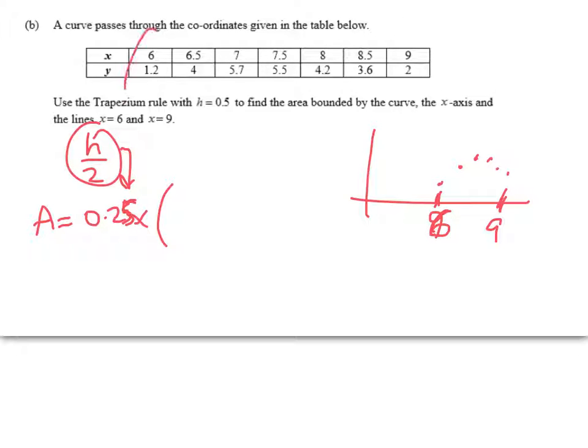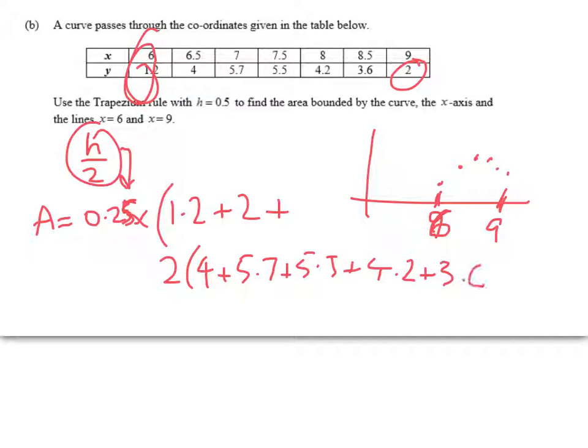So that's my h over 2, times, and then my n points. 1.2 plus 2, plus 2 times all the ones in the middle, 4, plus 5.7, plus 5.5, plus 4.2, plus 3.6. There we go, and that works out to be 12.3.